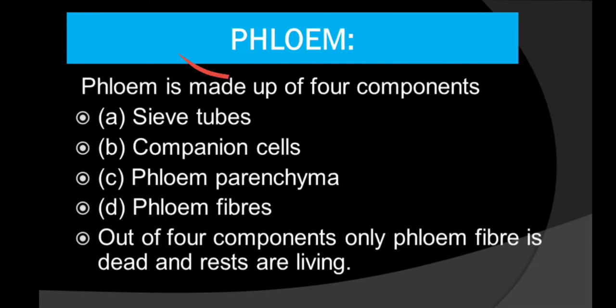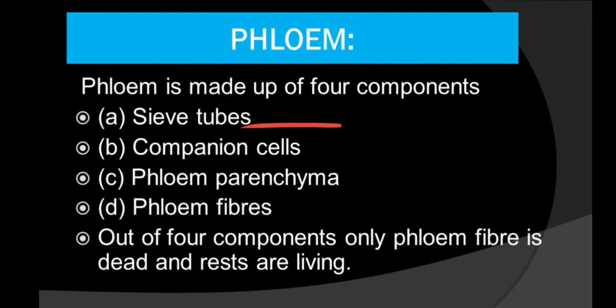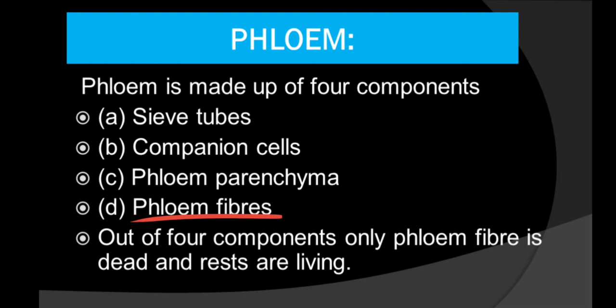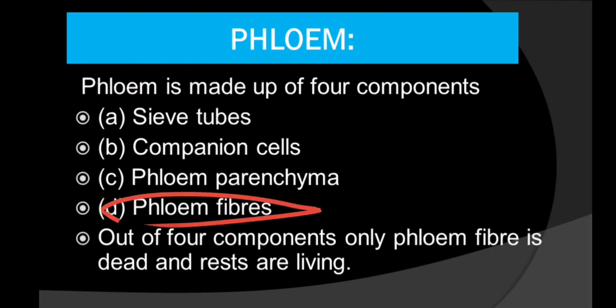Phloem is made up of four components: sieve tubes, companion cells, phloem parenchyma, and phloem fiber. Out of these four components, only the phloem fiber is dead. In xylem, only the parenchyma is living and the rest are dead. But in phloem, the phloem fiber is dead and the rest of the three are living.